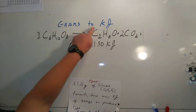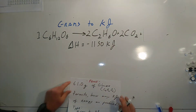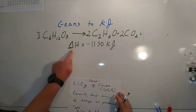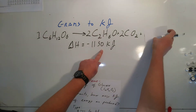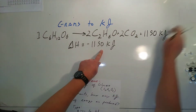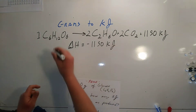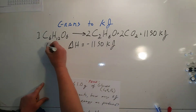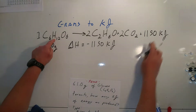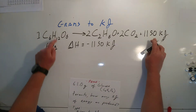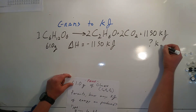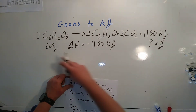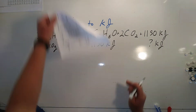This is a grams to kilojoules type problem. The negative sign for the kilojoules means that it can be written as a product. With 61 grams of glucose, how many kilojoules of energy can be produced? A grams to kilojoules type problem.